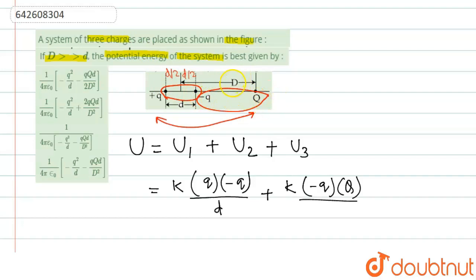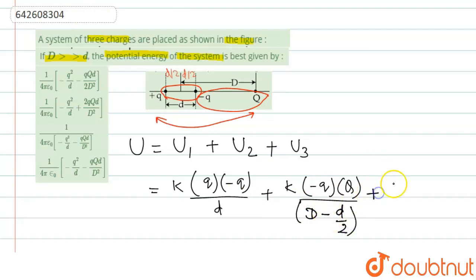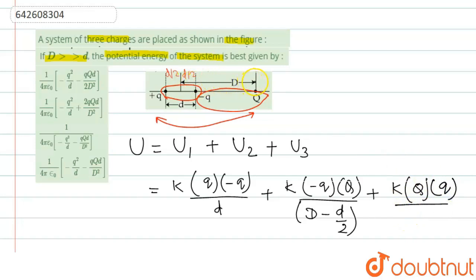The distance between the two charges is d, so half will be d/2 and the other half will also be d/2. So the distance between -q and capital Q will be d minus d/2. The distance between capital Q and +q: this distance is d, and this one is d/2, so the total distance will be capital D plus d/2.